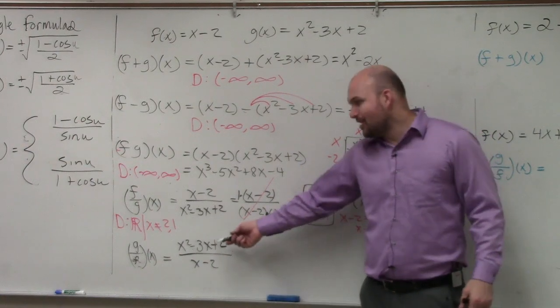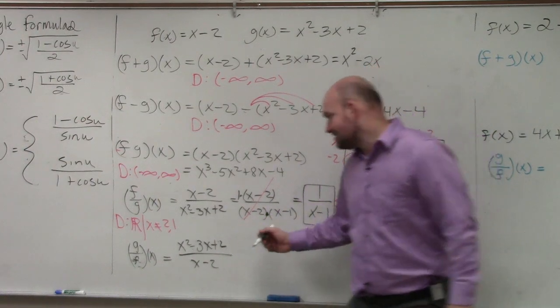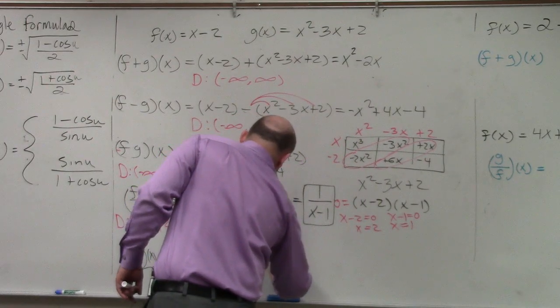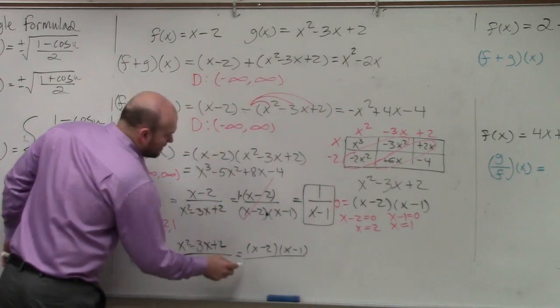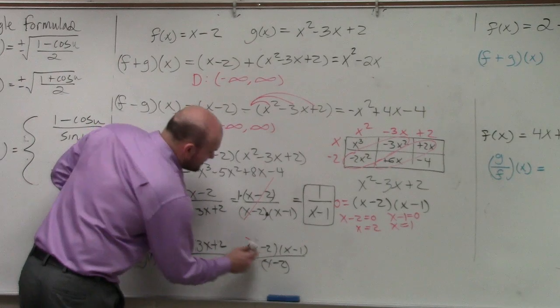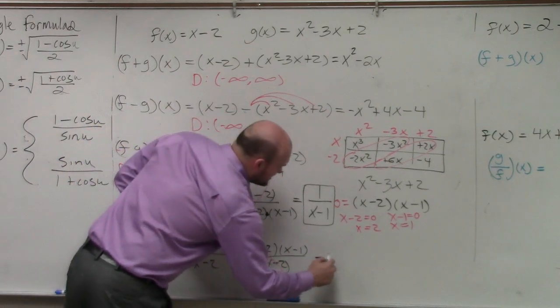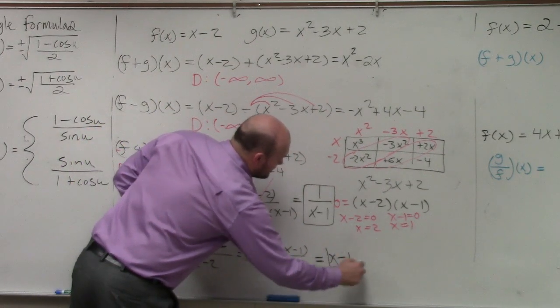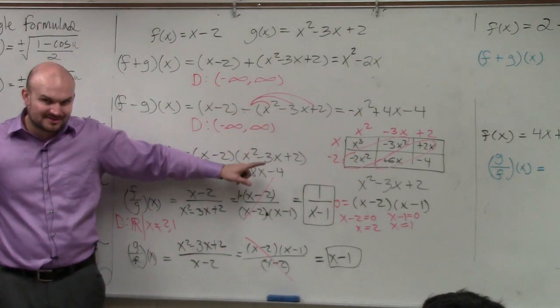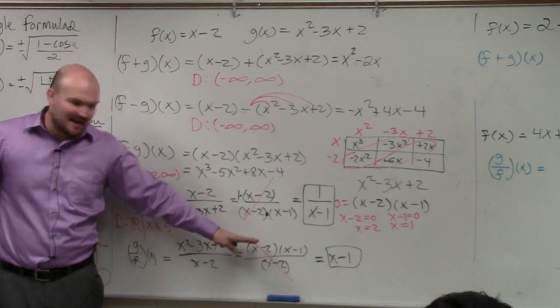But why do all that if we don't have to, correct? If we know that this is factorable, is it much easier just to say, oh, this is x minus 2 times x minus 1 all over x minus 2. These divide out. Therefore, my final answer is just x minus 1. I didn't have to do synthetic division to solve this. I just factored it and simplified.